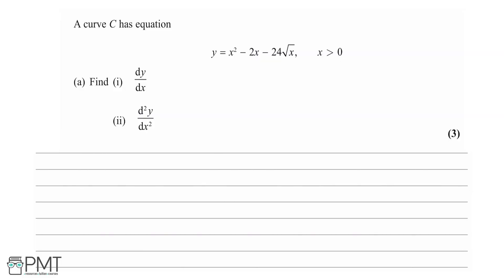We are told a curve C has equation y equals x squared minus 2x minus 24 root x, where x is greater than 0. Part A asks us to find dy by dx first, and then part ii asks for d squared y by dx squared. The first thing I want to do is rewrite y in a way which will make it easier to differentiate. So we've got x squared minus 2x minus 24x to the half.